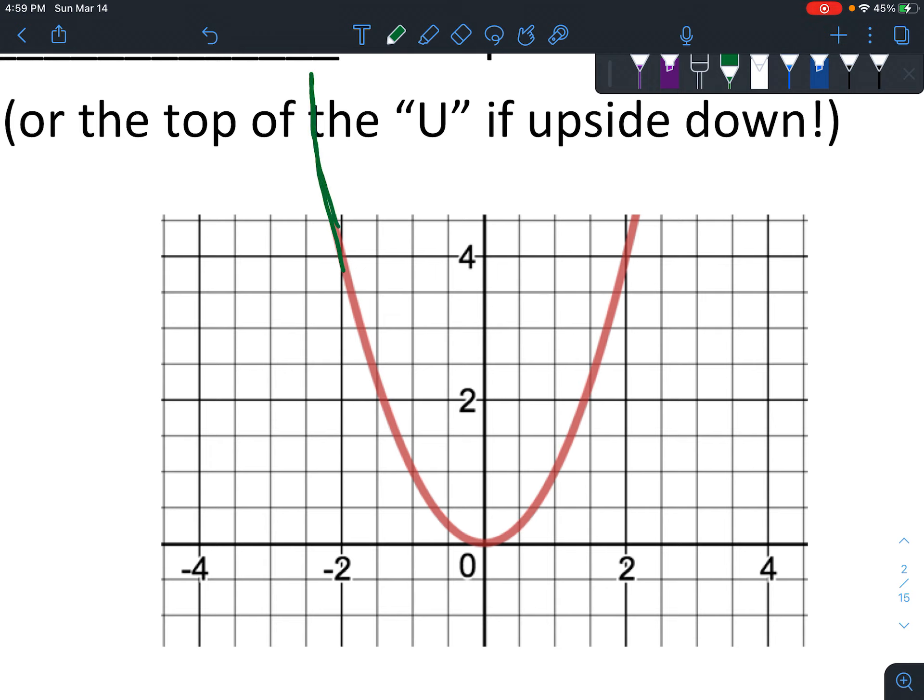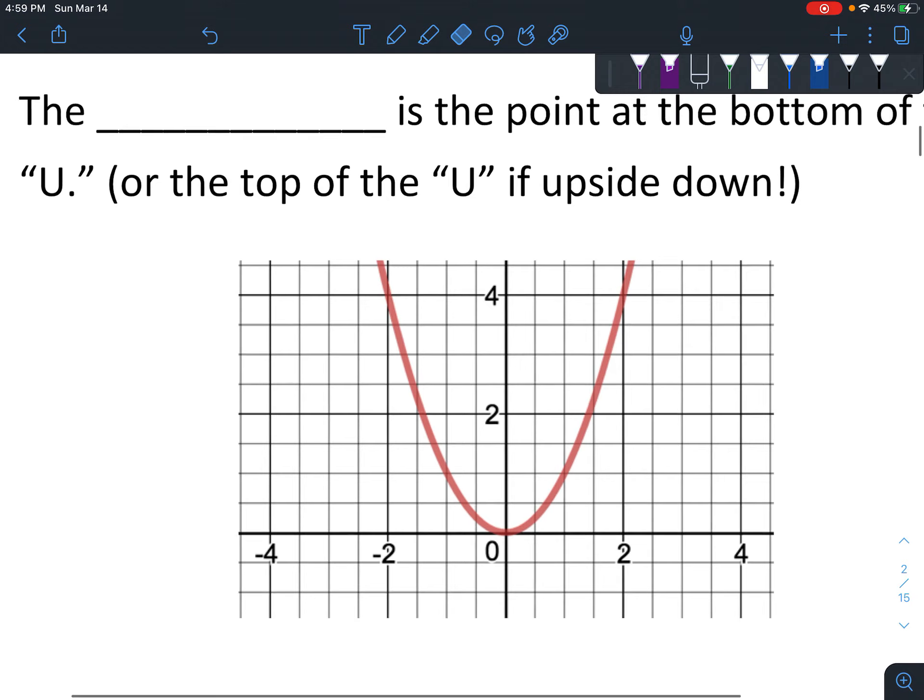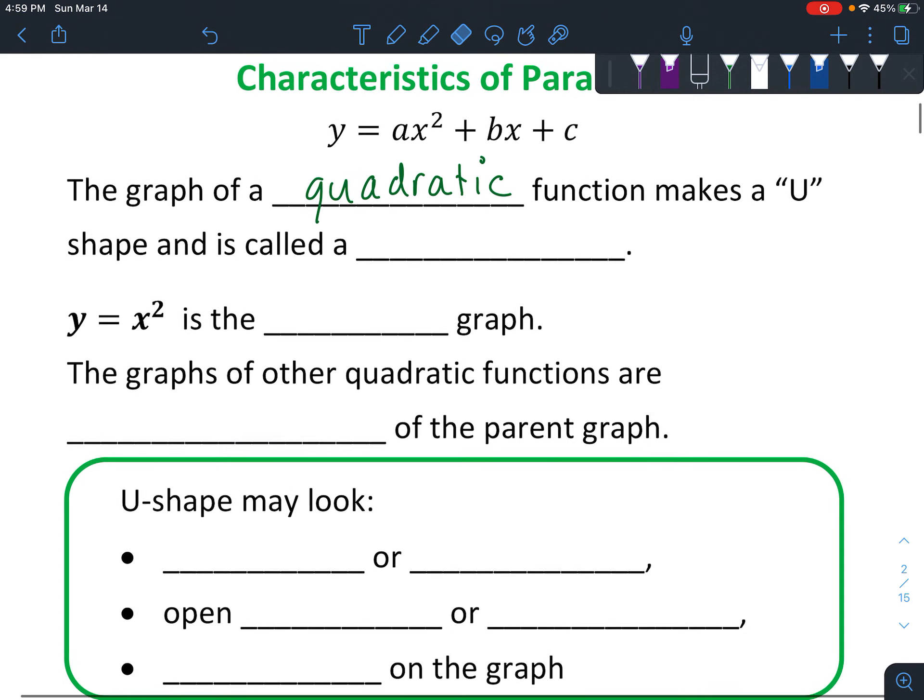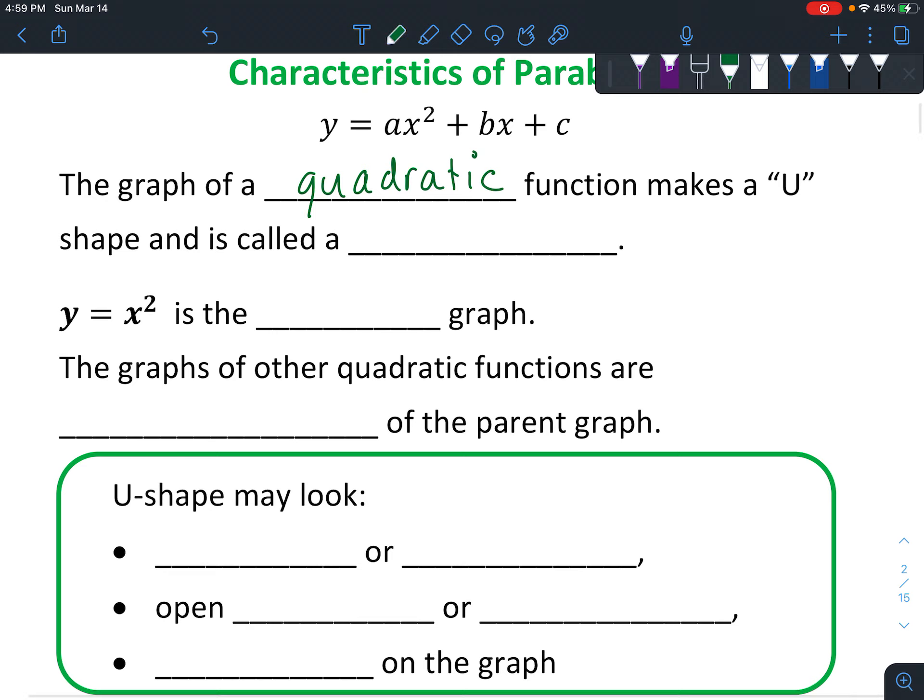You'll notice that it's always rounded at the bottom like this, and we're going to talk a lot about just some general characteristics today. So the U-shape is technically called a parabola. Y equals x squared is the parent graph.